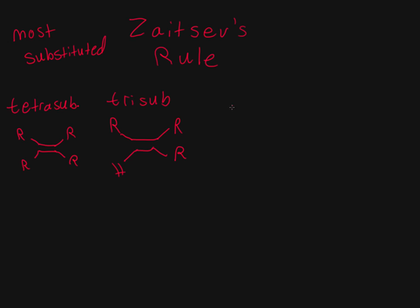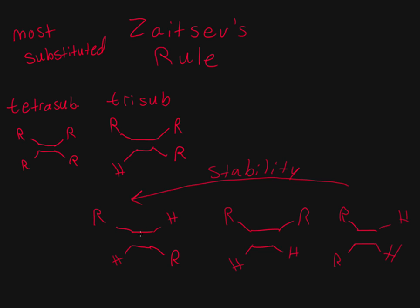The next one would be di-substituted, but this gets a little tricky. There are three different types of di-substituted products we can form. One being trans, where we have our R groups on opposite sides. We can have a cis alkene, where we have R groups on the same side. Or we can have a 1,1-di-substituted with both R groups on the left or right sides. These are all di-substituted products.